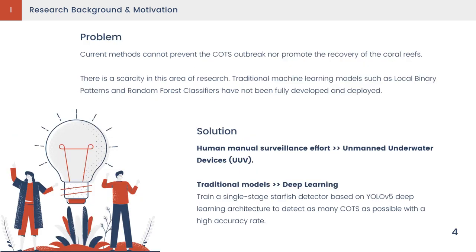All things considered, it calls for a cost-effective, safe, and robust alternative to perform autonomous starfish surveillance. Regarding this unique area of research, there have only been two studies that use traditional machine learning models to detect this starfish. Our solution is to motivate an autonomous detector that can be embedded into unmanned underwater devices. This detector is built on deep learning, which is capable of recognizing as many starfish as possible at high accuracy.